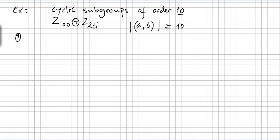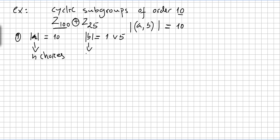Case 1: order of a is 10 and order of b is 1 or 5. Now, Z100 has a unique cyclic subgroup of order 10, and any cyclic group of order 10 has 4 generators. So we have 4 choices for a and 5 choices for b, giving 20 possibilities for (a, b).